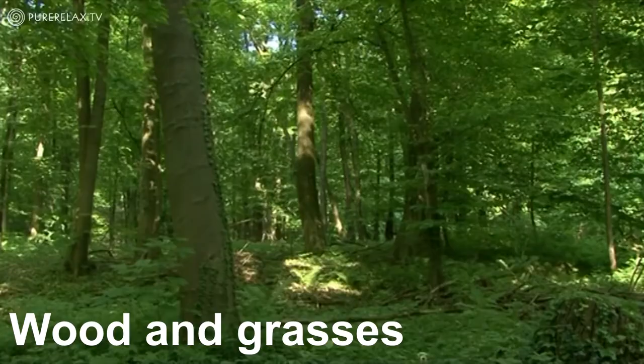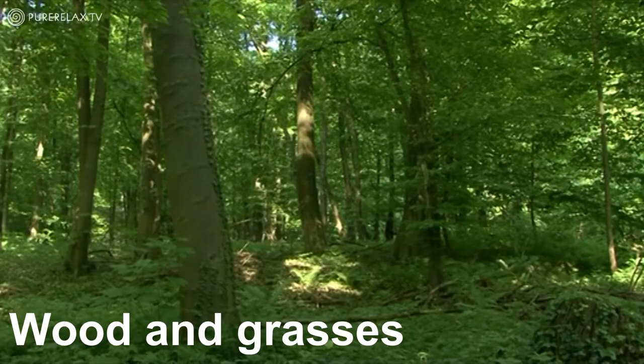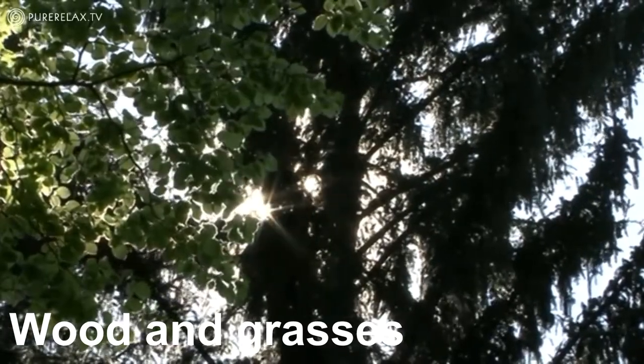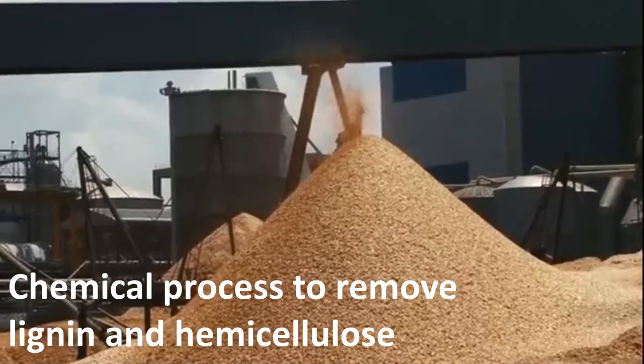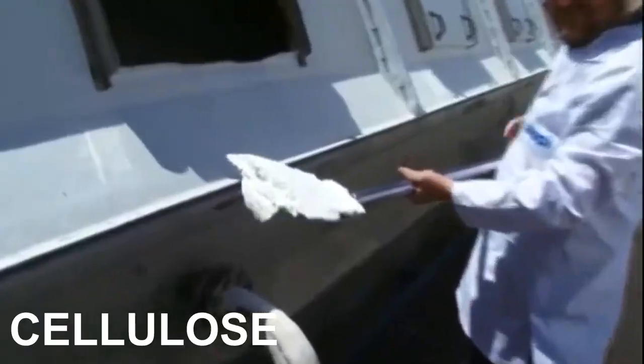Most of the paper that we use comes from wood and grasses, but a chemical process is needed to remove other components and obtain cellulose, the main component of paper, the most abundant organic polymer on Earth.